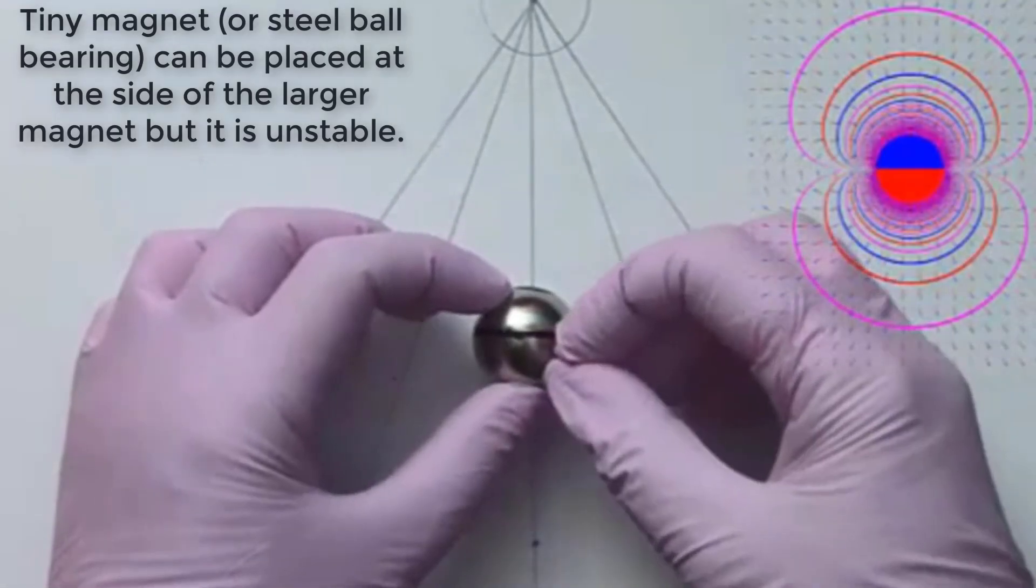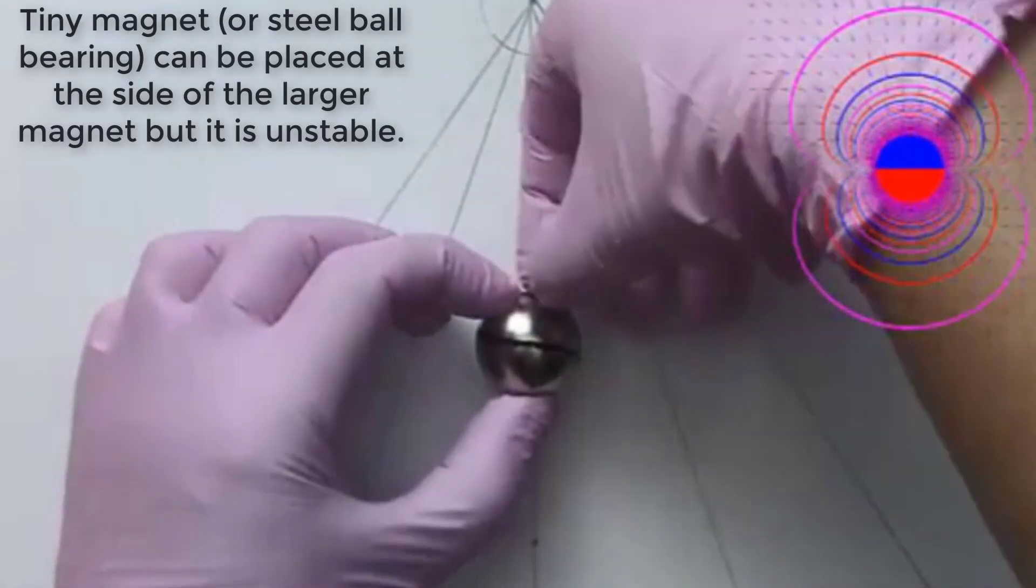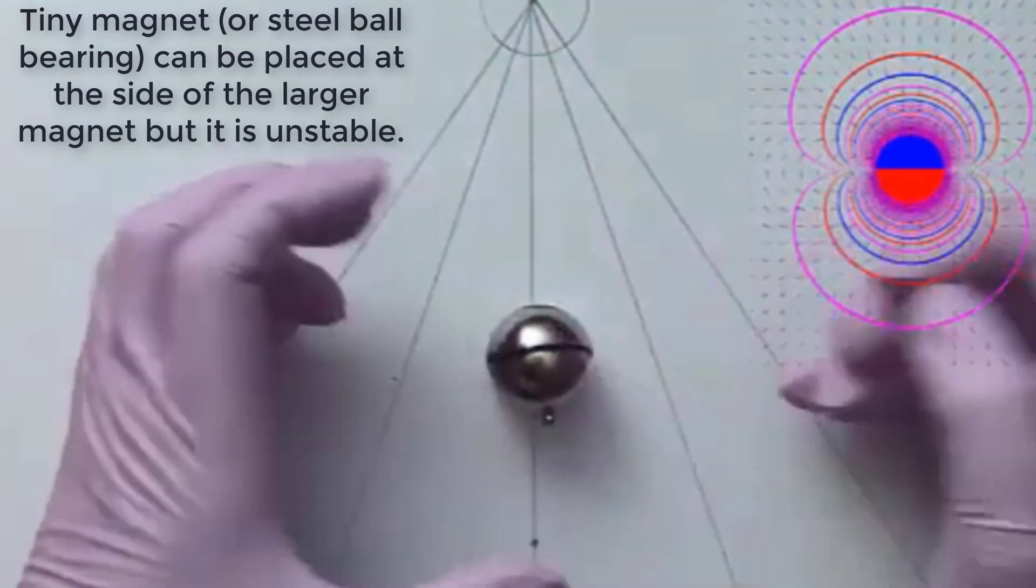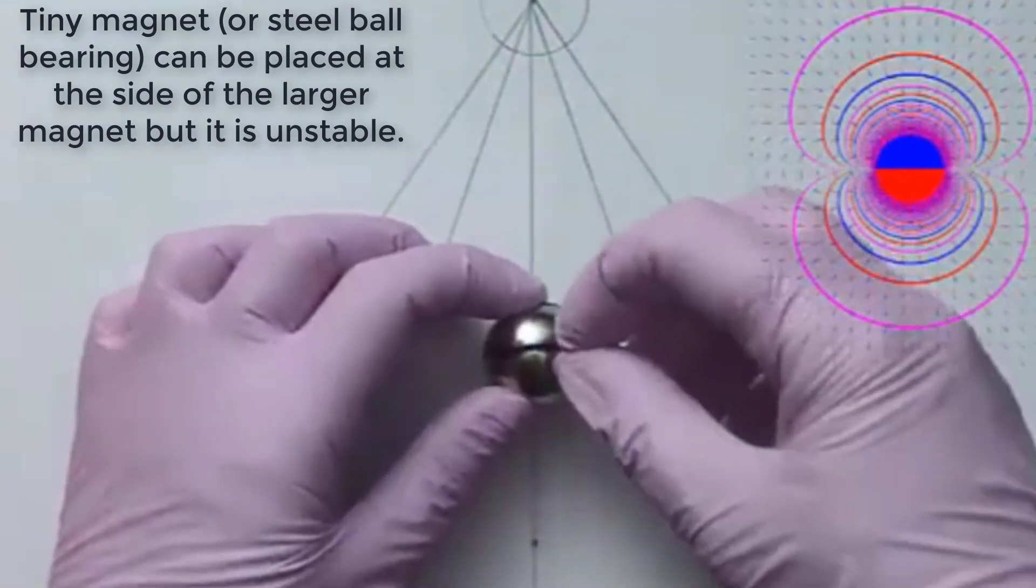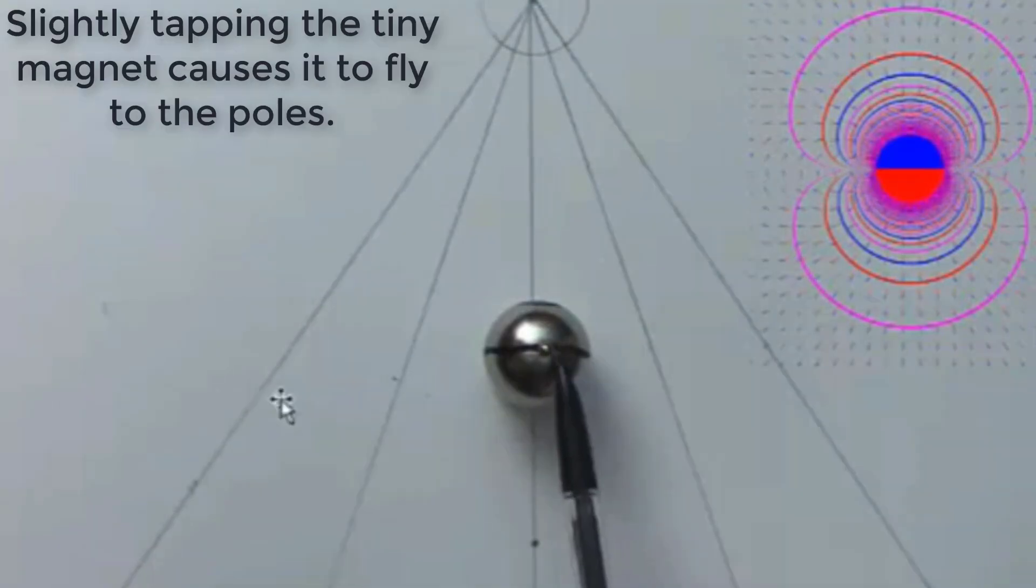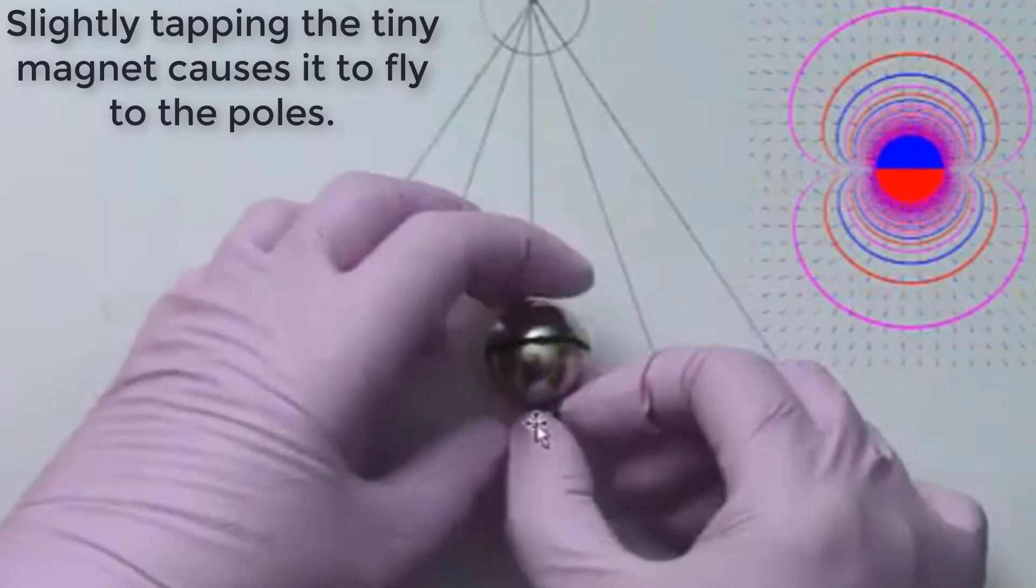Tiny magnet or steel ball bearing can be placed at the side of the larger magnet but it is unstable. Slightly tapping the tiny magnet causes it to fly to the poles.